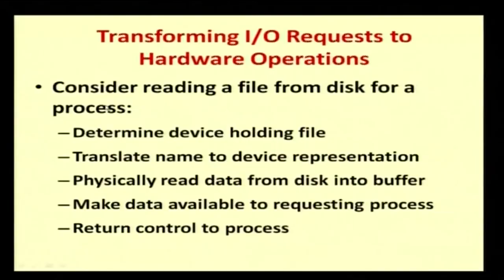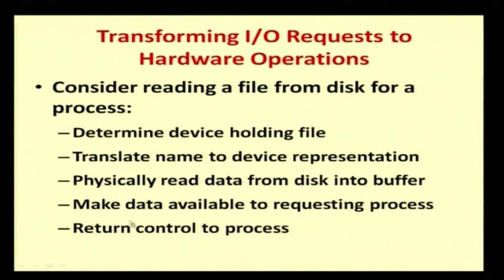Now let us see how an I/O request gets transformed to a hardware operation. Consider reading a file from disk for a process: first, determine the device holding the file; translate the name to device representation; physically read data from disk into a buffer; make data available to the requesting process; then return control to the process. This is how we transform the I/O request to a hardware device to carry out operations.